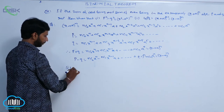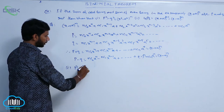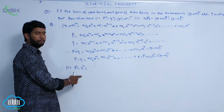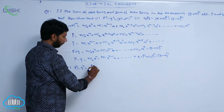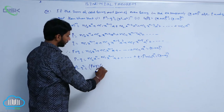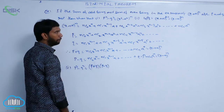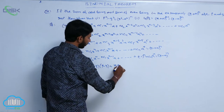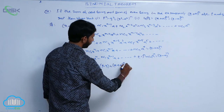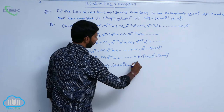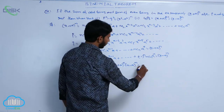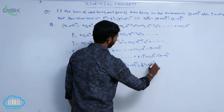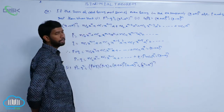For the first bit, p squared minus q squared is of the form a squared minus b squared, which can be written as (p + q)(p - q). Here p plus q is equal to (x + a)ⁿ and p minus q is equal to (x - a)ⁿ, so the product equals (x squared minus a squared) whole power n.